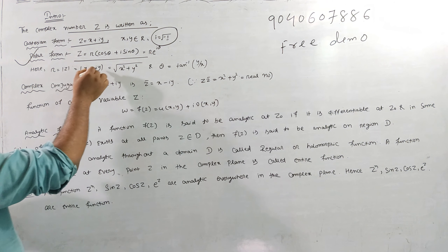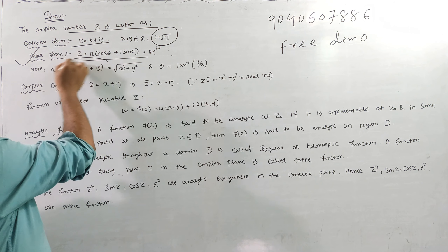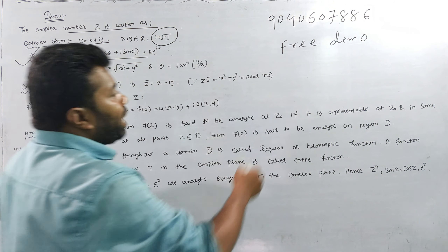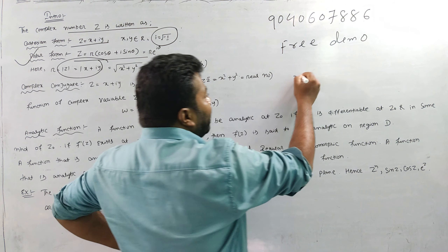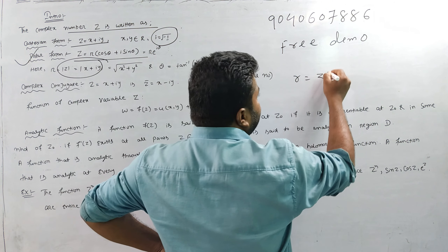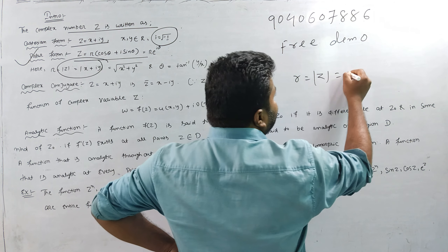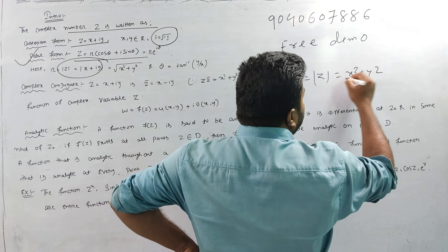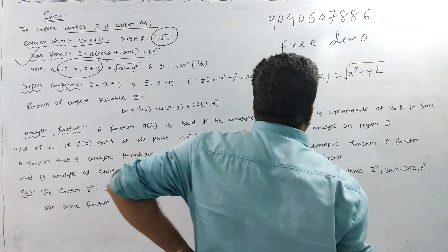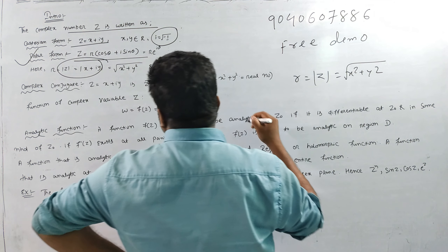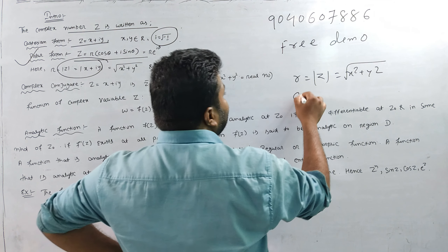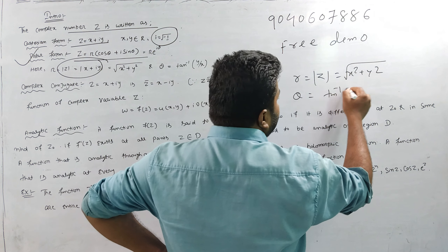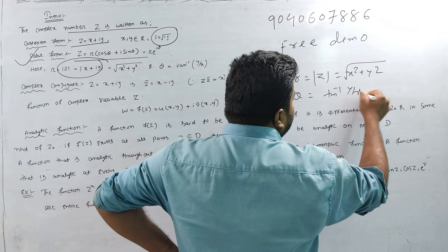What is R? R is equal to |Z|. You will be able to write R equals the square root of X squared plus Y squared. And θ equals tan⁻¹(Y/X).